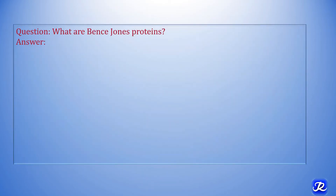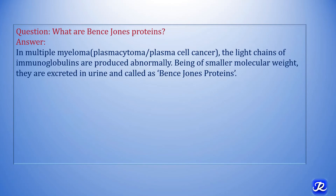What are Bence Jones proteins? In a condition called multiple myeloma — also called plasmacytoma or plasma cell malignancy — there is increased production of light chains of immunoglobulins. These immunoglobulin light chains, being of smaller molecular weight, are excreted in urine and are called Bence Jones proteins.